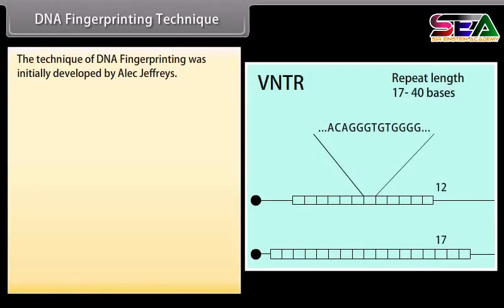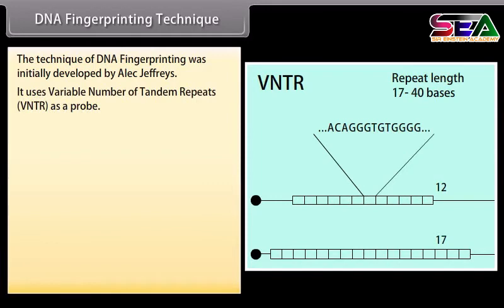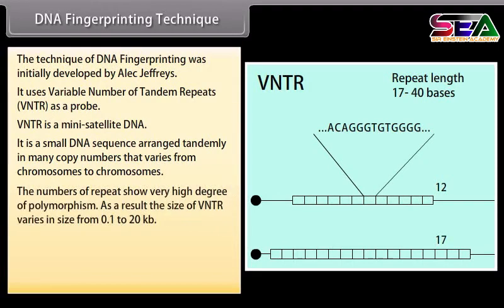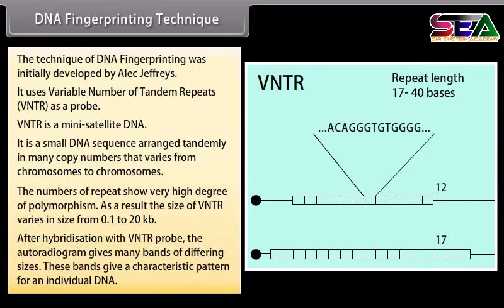The technique of DNA fingerprinting was initially developed by Alec Jeffreys. It uses variable number of tandem repeats (VNTR) as a probe. VNTR is a mini satellite DNA — a small DNA sequence arranged tandemly in many copy numbers that varies from chromosome to chromosome. The number of repeats shows a very high degree of polymorphism, so the size of VNTR varies from 0.1 to 20 KB. After hybridization with a VNTR probe, the autoradiogram gives many bands of differing sizes, giving a characteristic pattern for an individual's DNA.